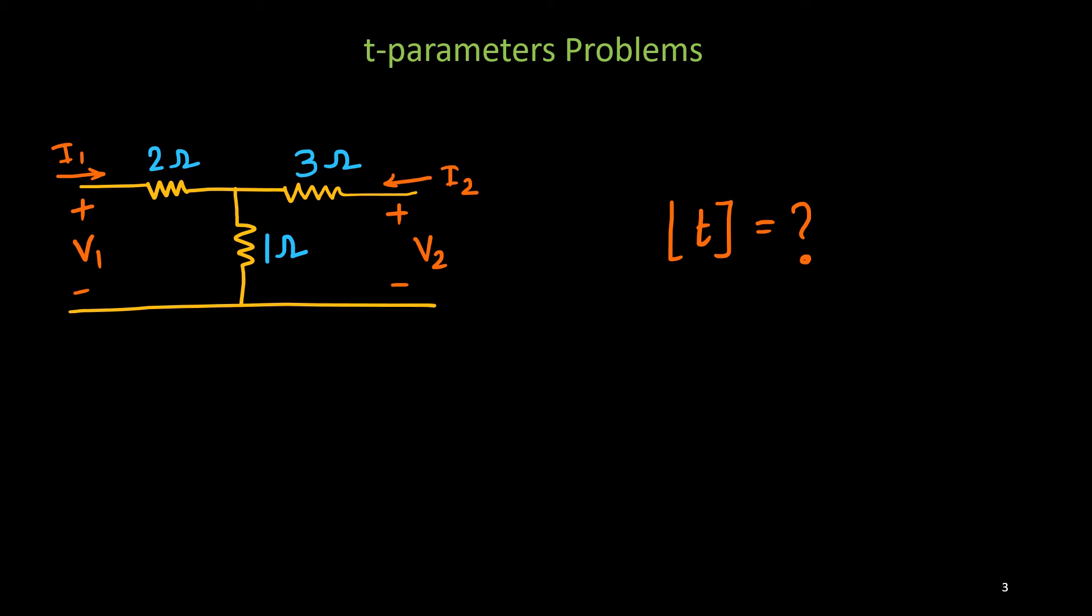Now, this is the problem. This T-network problem we had solved in last class and we got T-Parameters or ABCD parameters using equation. We have expressed V1, I1 in terms of V2, I2 then we have got the T-Parameters problem.